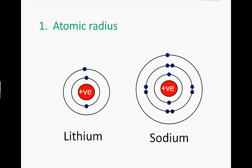Let's first look at atomic radius and compare lithium with sodium. Atomic radius is the distance from the center of the nucleus to the outermost electron. We can see here that the atomic radius for lithium is less than the atomic radius for sodium.